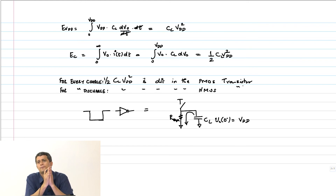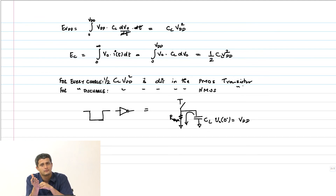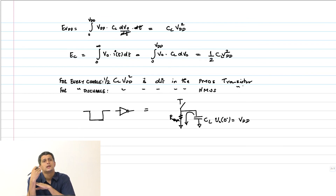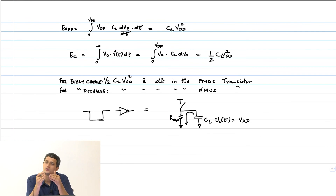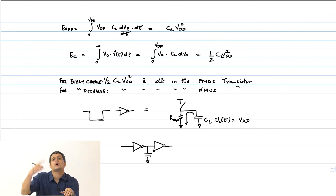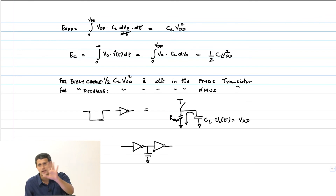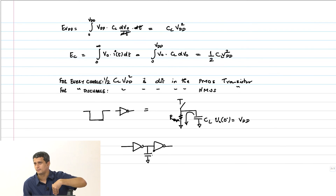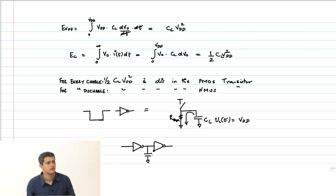The important thing to note is that neither the charging nor the discharging energy depends on the resistance. It is not a function of R_equivalent_N or R_equivalent_P, and therefore it does not depend on the design parameters of the transistors. Of course, if one inverter is connected to the next, then the capacitance on this node depends on the input capacitance of the next gate — so there it does depend on the width of the next transistor, but not on the width of the inverter itself.